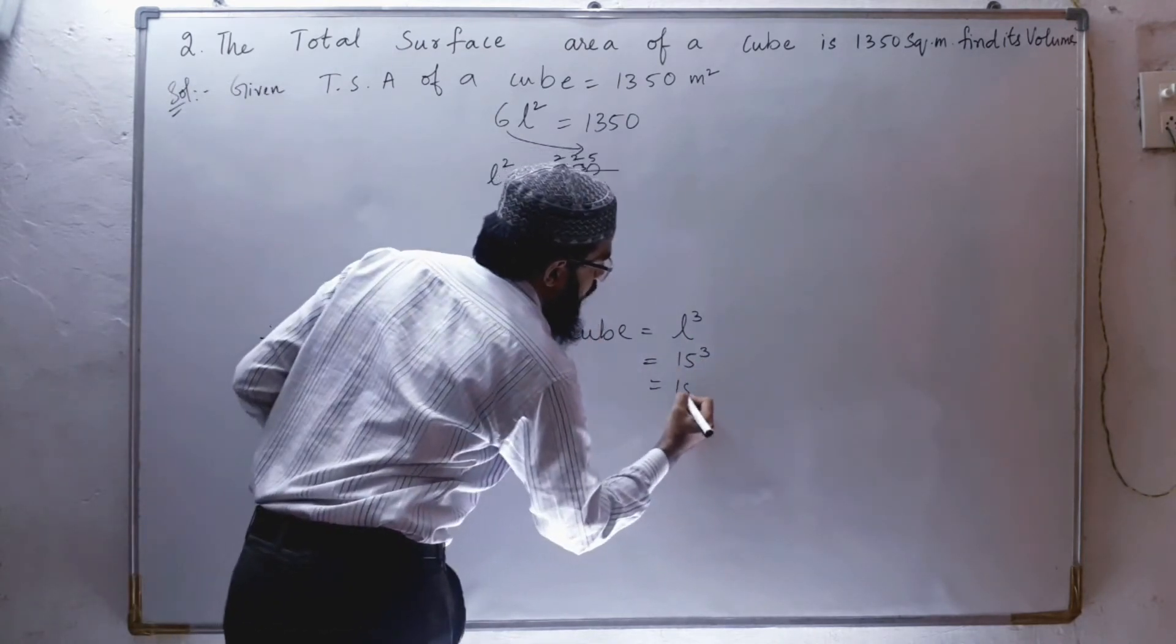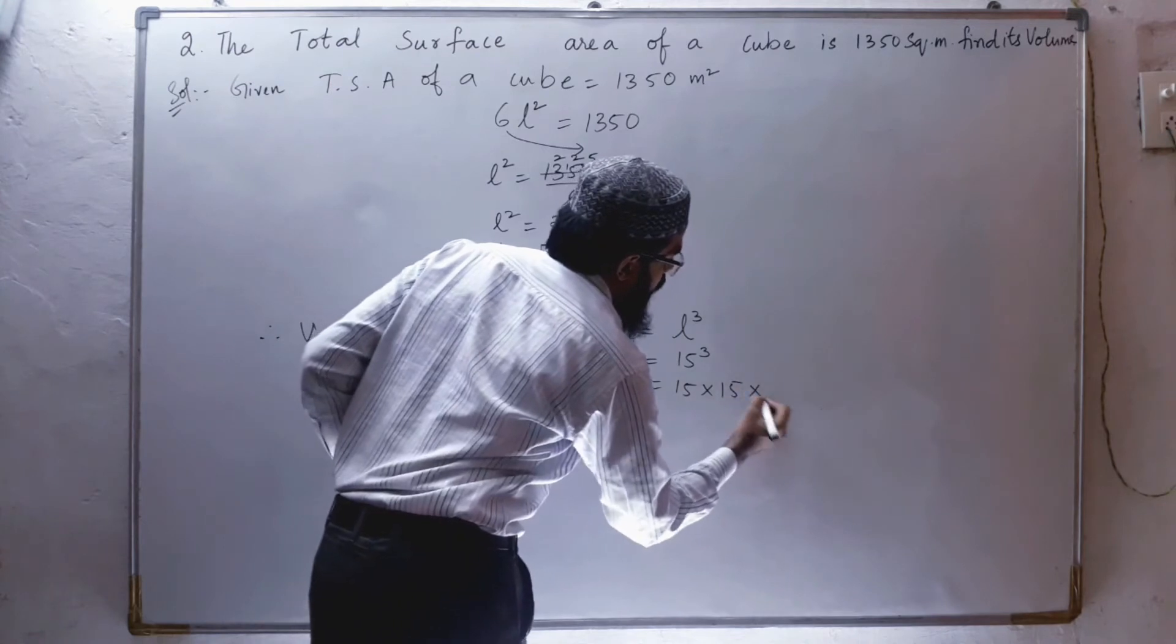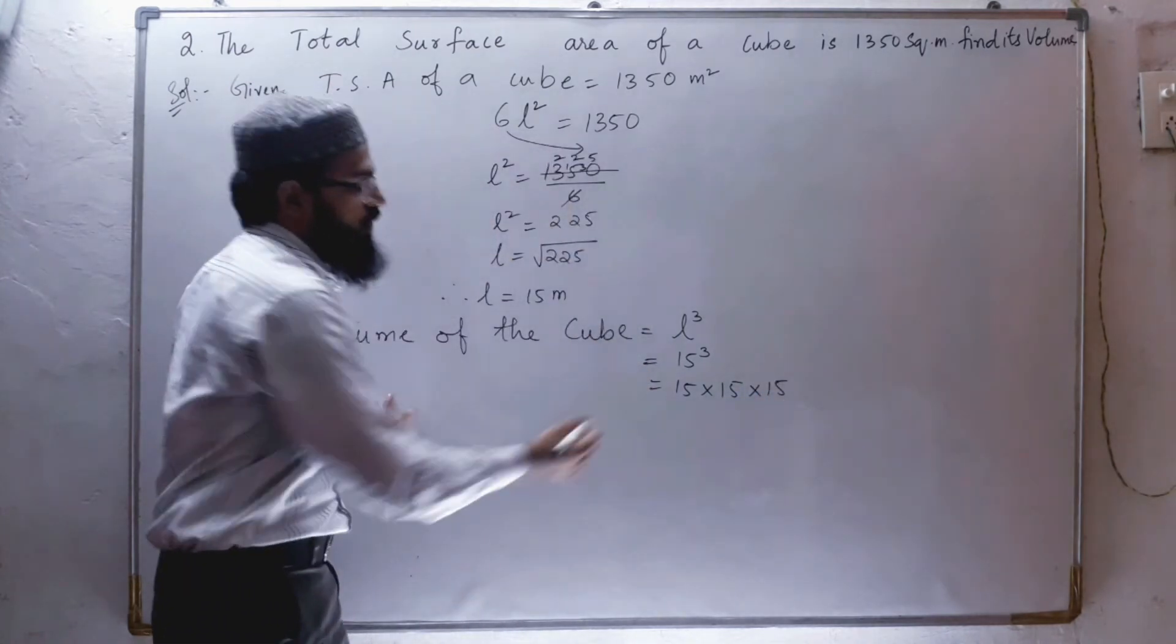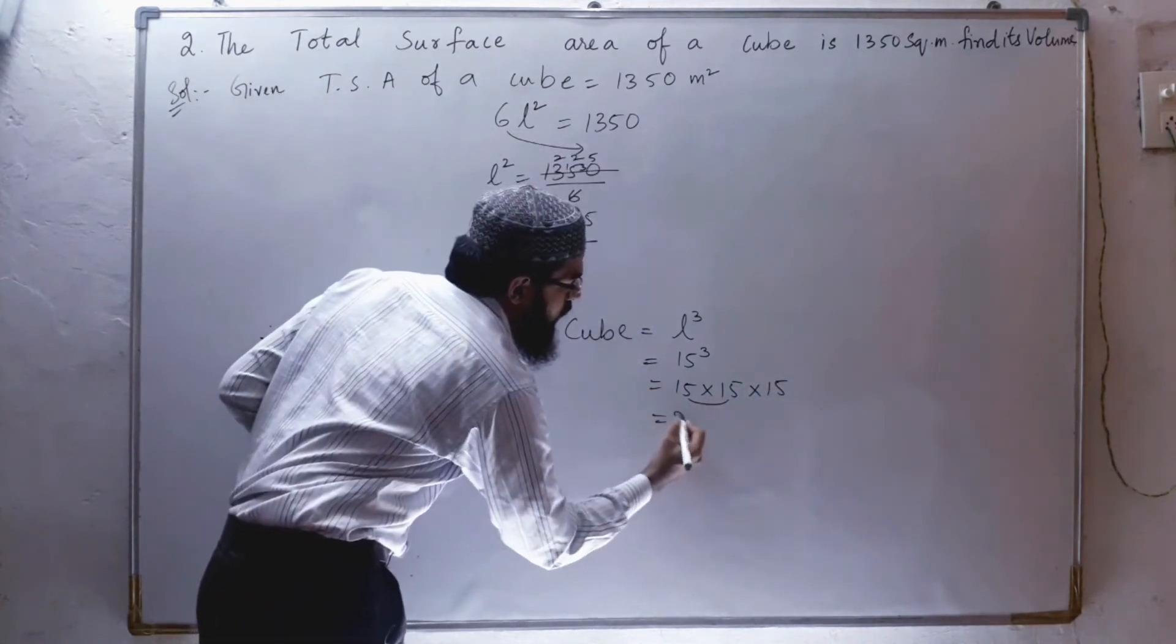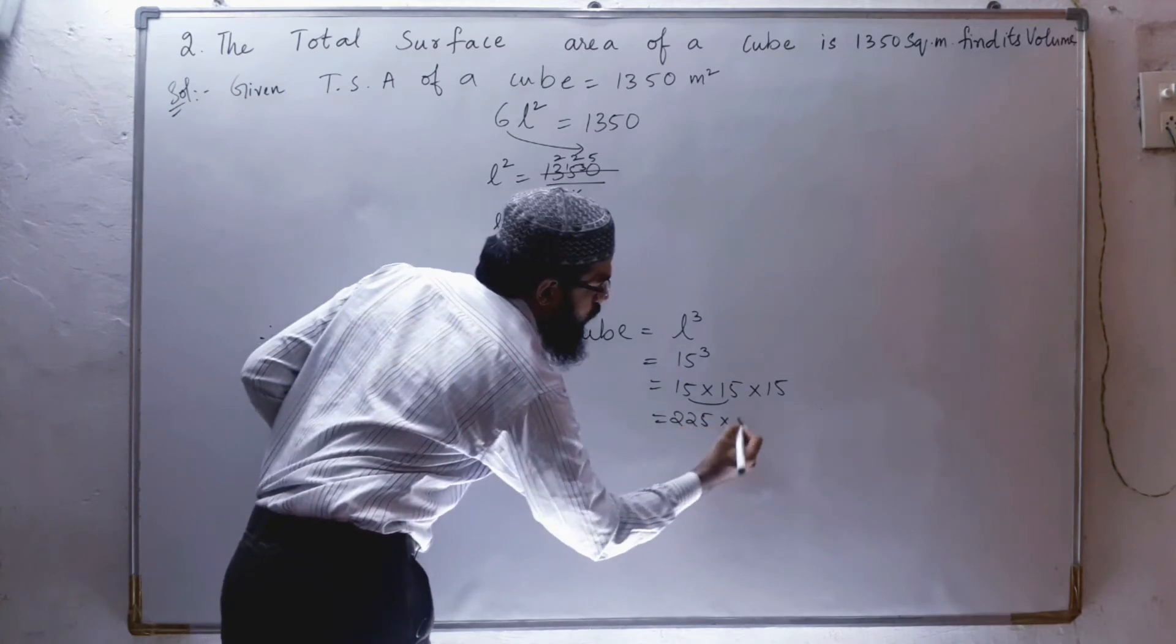So l is nothing but 15, so 15 cubed. 15 cubed is 15 into 15 into 15. 15 into 15, 15 times 15 is 225 into 15.